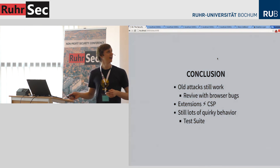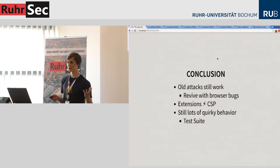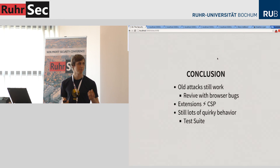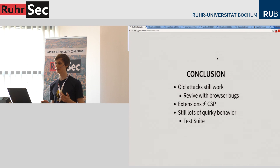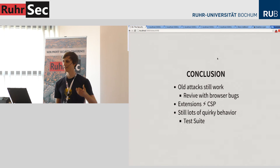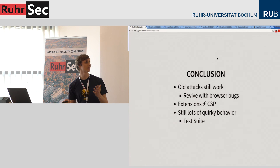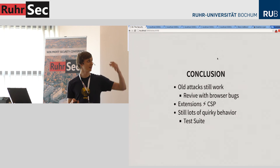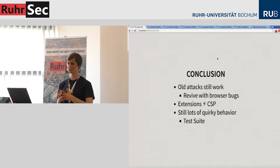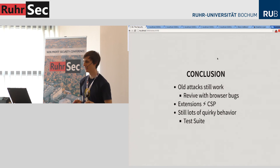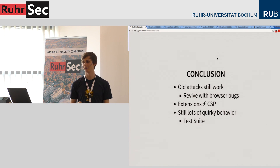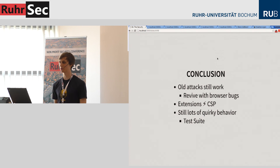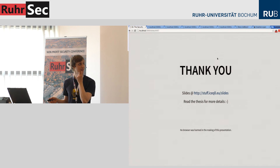In conclusion: many of these attacks are old — people found them five or six years ago — but browsers started to mitigate them, and nowadays you require browser bugs to re-enable them. One key master bug is opening a chrome-extension:// URL. Extensions and CSP don't go well together. If there's one thing to remember from this talk: chrome-extension:// and chrome:// URLs are always exempt from CSP — that's your free bypass in most cases. There's still lots of quirky browser behavior, and I will release a test suite you can use to look into other issues. Thank you.